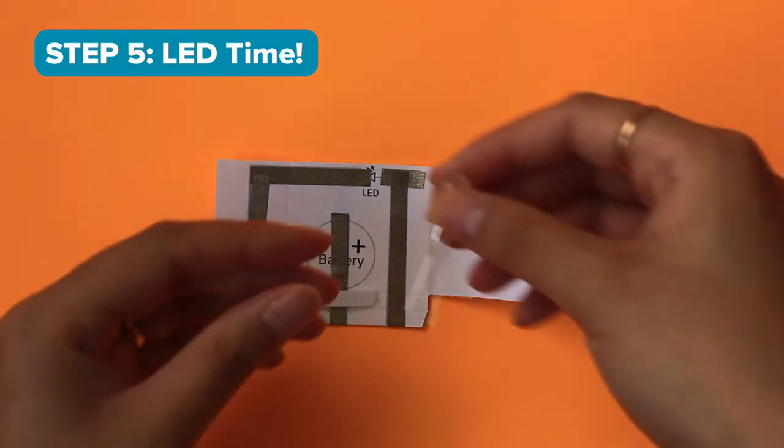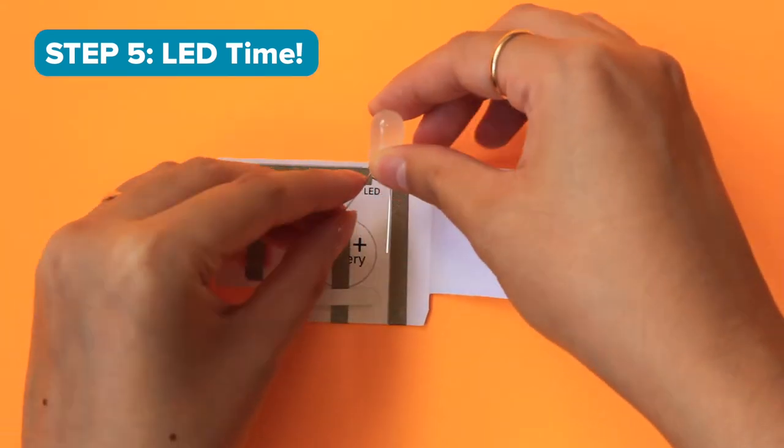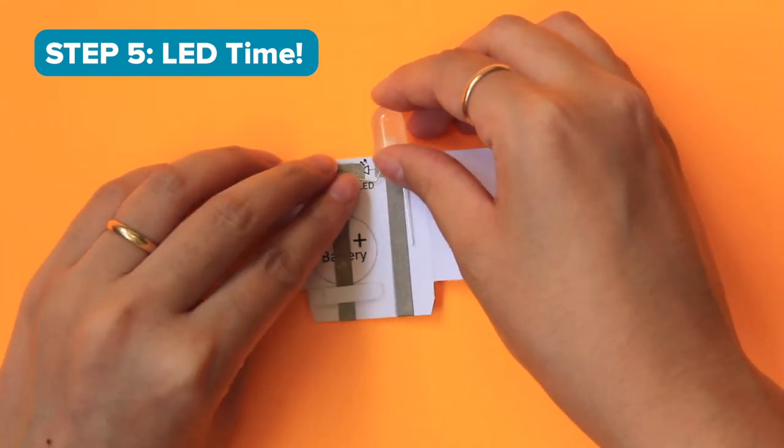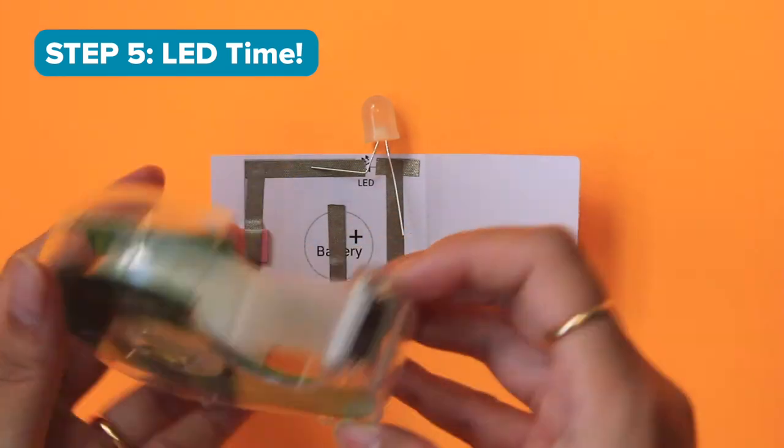Place your LED so that the longest pin touches the positive path of your circuit. The shortest pin should touch the negative part of your circuit. Tape the pins in place with regular scotch tape.